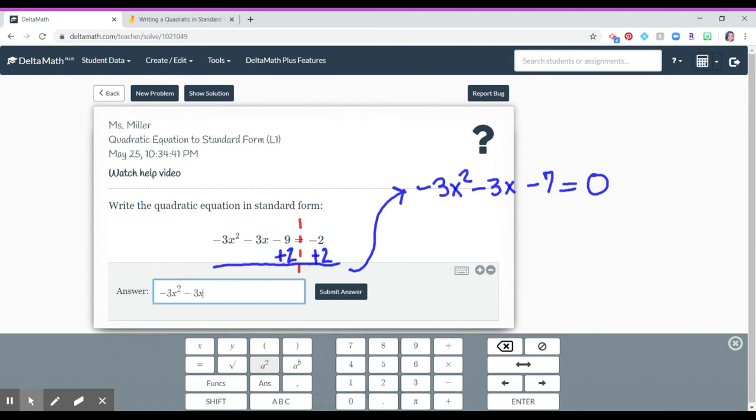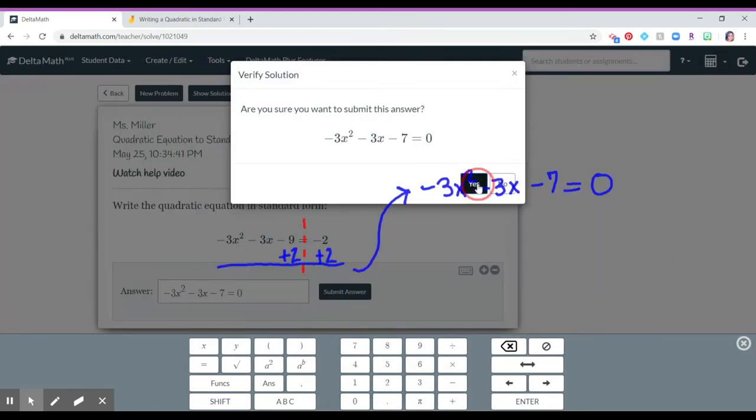And what you can do is then do negative 3x, and we can go squared, minus 3x, minus 7, equals 0. I'm just using my keyboard and hit submit, and I'm going to hit yes.